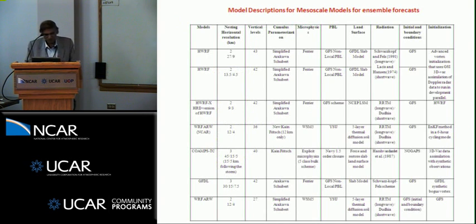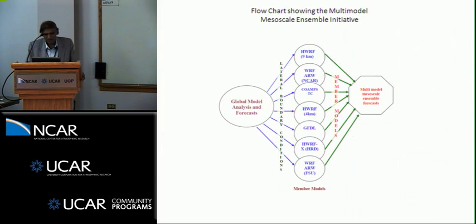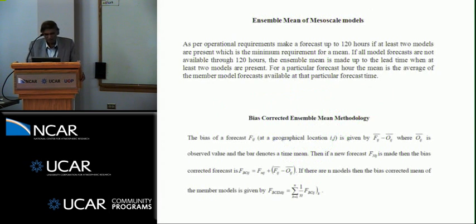Almost all the models had parameterized cumulus convection, except for the innermost domain of Chris Davis' ARW, which was cloud-resolving. The global models that provided the analysis uniformly were GFS, except for the COAMPS. Various types of ensembles were constructed: one is the simple ensemble mean, and then we also constructed a bias-corrected ensemble mean from this small sample — you take the forecast minus the observed and make the bias correction.